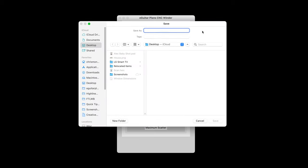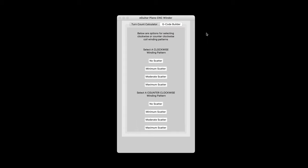And from there, I can decide what kind of a traversing pattern that I want to use. And in this case, I chose a maximum scatter.